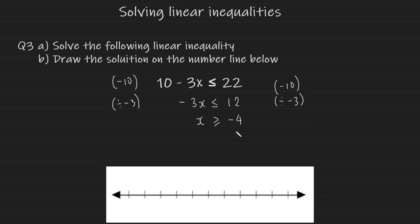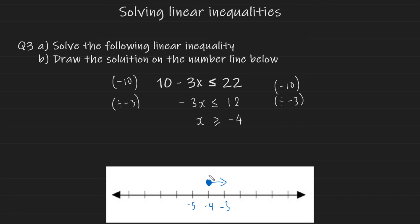That's very important to remember — dividing or multiplying by a negative flips the inequality symbol. Drawing the solution: since the solution contains a negative value, the number line shows negative numbers, so we write −5, −4, and −3. Because the inequality has an equals component (≥), the circle above −4 is filled in. Since x is on the left and the symbol is greater-than-or-equal-to, the arrow points to the right.